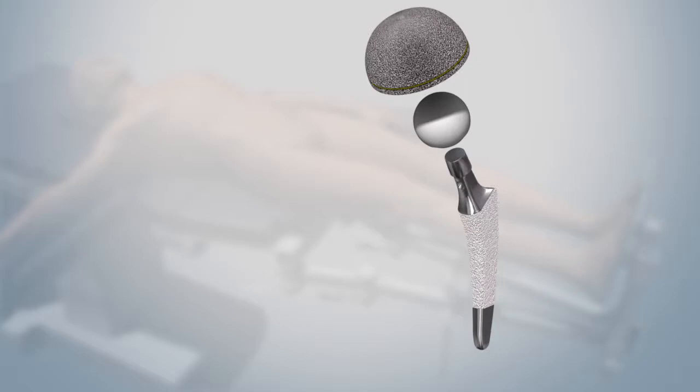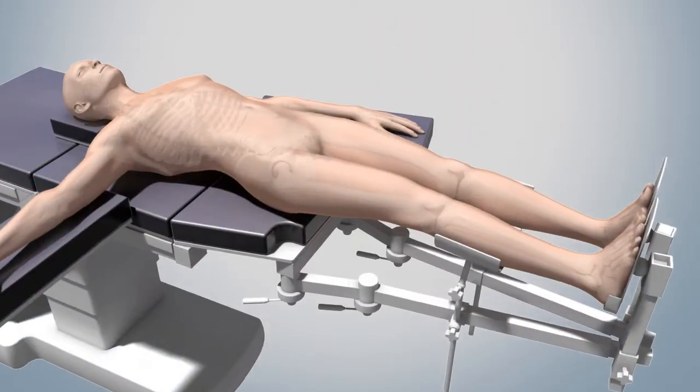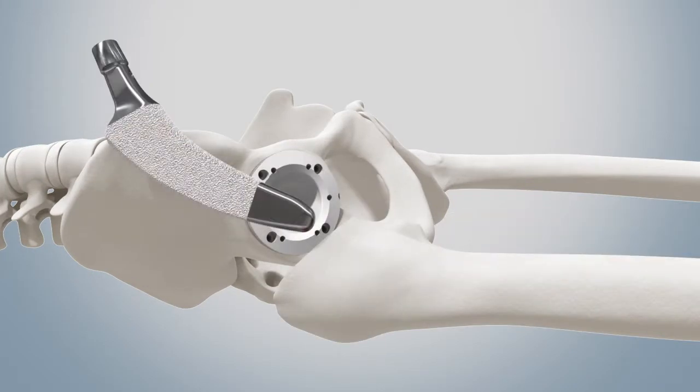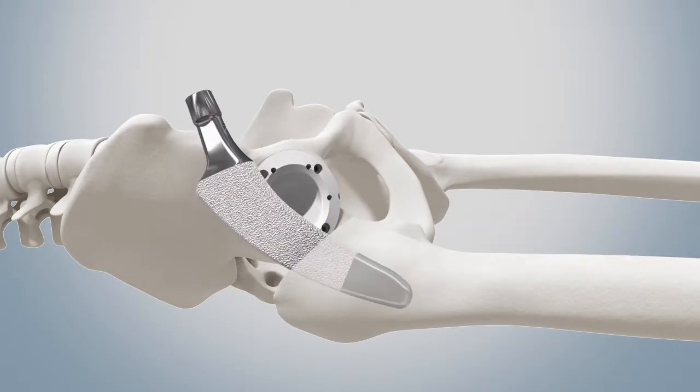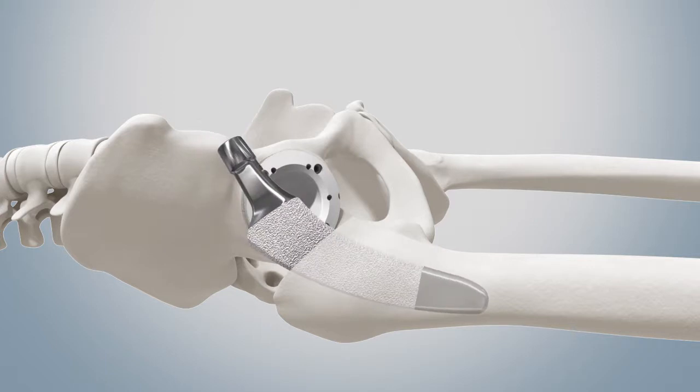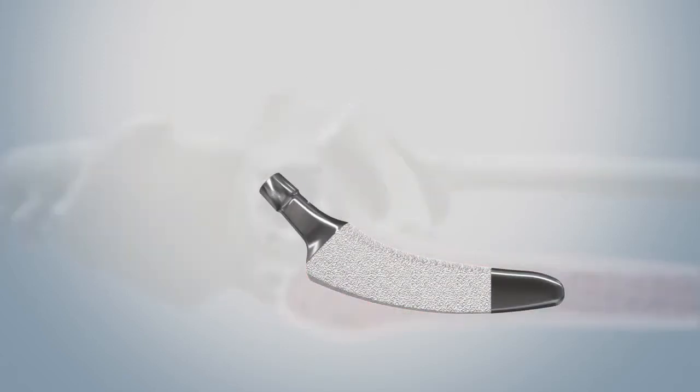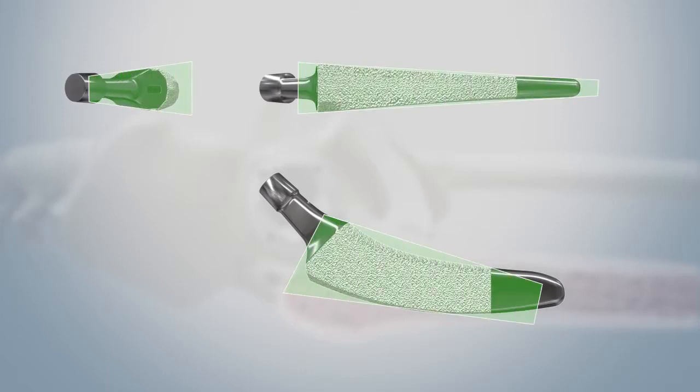These are uncemented implants, meaning they do not require any fixation involving cement. The primary fixation of these uncemented implants takes place via press fit anchorage, in which the so-called primary stability is achieved already intraoperatively by forceful impaction and chalking of the appropriately wedge-shaped components.